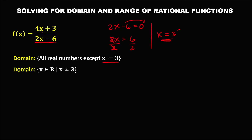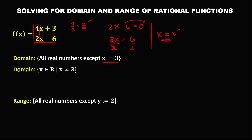Then to find the range, we have x and x. Take the numerical coefficients — that's 4 over 2, and 4 over 2 is equal to positive 2. So the range is all real numbers except y equals positive 2, or y is an element of real numbers such that y is not equal to positive 2.